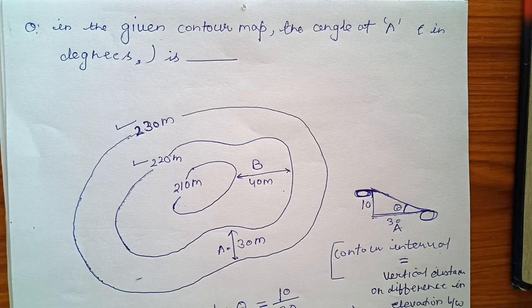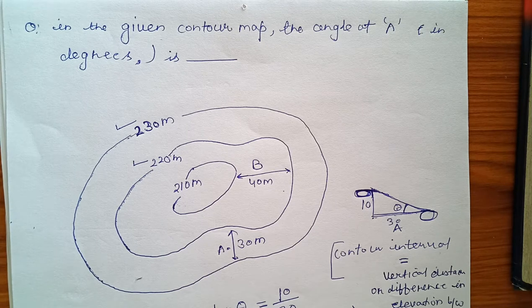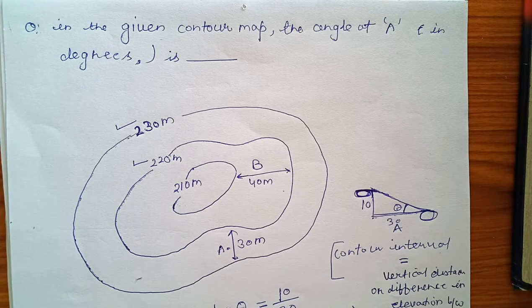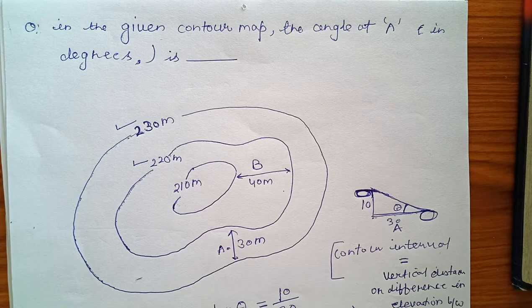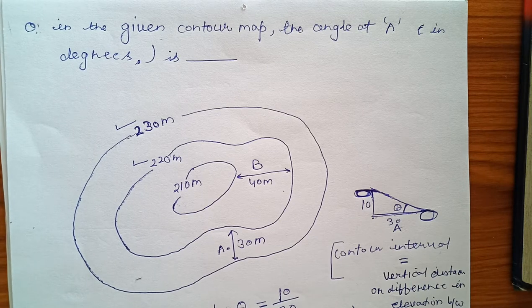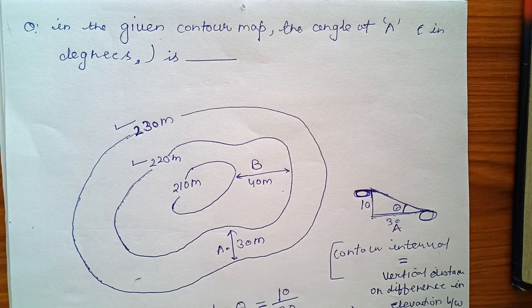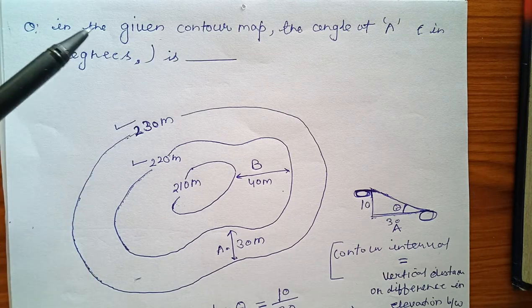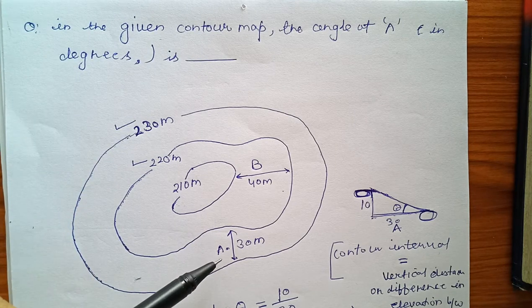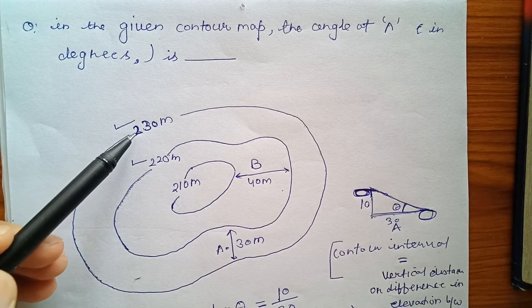Hello all, so today we will solve all the GATE 2020 questions in a single video. Earlier we have solved these numerical questions, but this time we are giving solutions in a single video. So here is the first question - this was the contour map question where we have to find out the angle at point A.